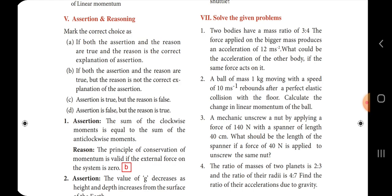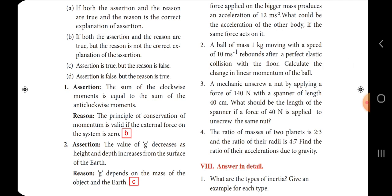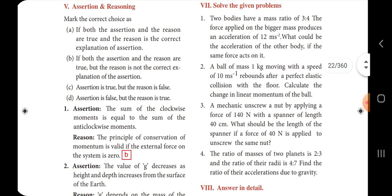Fifth section: assertion and reasoning. Mark the correct choice. A: if both assertion and reason are true and the reason is the correct explanation of the assertion. B: if both assertion and reason are true but the reason is not the correct explanation of the assertion. C: assertion is true but reason is false. D: assertion is false but reason is true. First one: assertion — sum of the clockwise moments is equal to the sum of the anti-clockwise moments. Reason — the principle of conservation of momentum is valid if the external force on the system is zero. The answer is option B: both assertion and reason are true but the reason is not the correct explanation of the assertion.